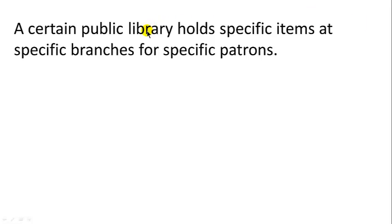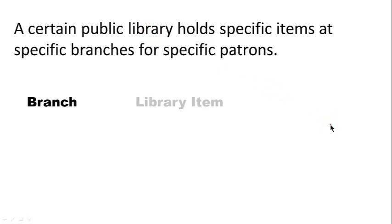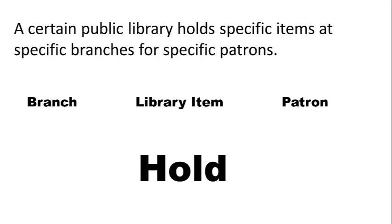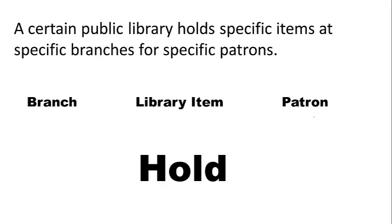Library is not an entity type here because we are talking about this particular library — we don't have many libraries. We are talking about a scenario with one library. Now, suppose you are talking about a system of several libraries — then library would also be an entity type. In this case, we have only one library. So in this scenario, you've got branch, library item, and patron. All three have to be mentioned when talking about a particular hold. We are calling that associative entity type as 'hold' — an item is being held for somebody.